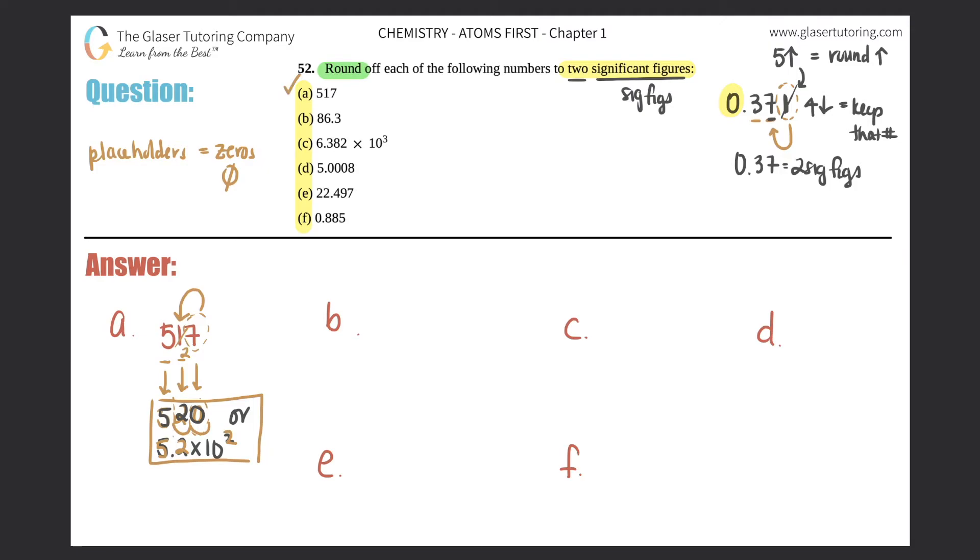B, 86.3. So the two sig figs are the eight and the six. The next number just tells you whether you should round up or not, but it's a three, so it should stay a six. So it would just be 86. You do not need a placeholder because the decimal is right here, so this would just be 86. And that's that for that.